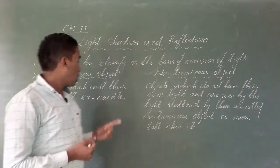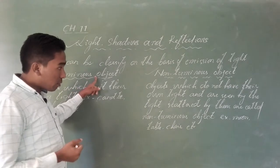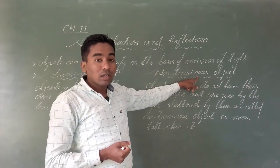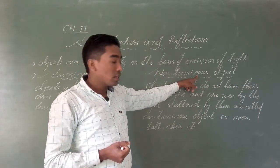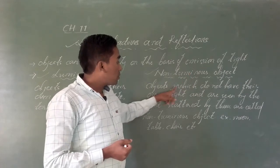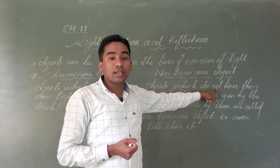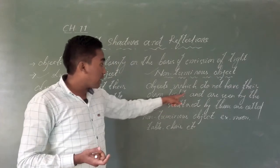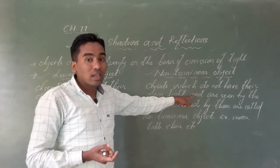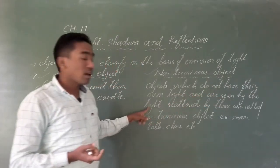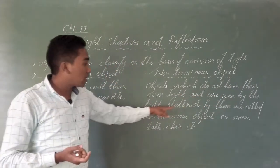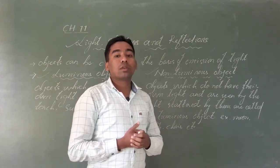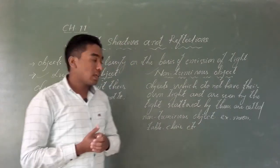So the objects which provide their own light — which give their own light — are known as luminous objects. The second type is non-luminous objects: objects which do not have their own light and are seen by the light scattered by them are known as non-luminous objects.